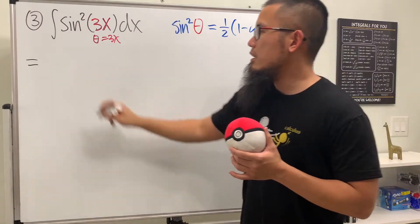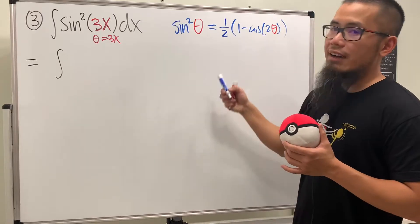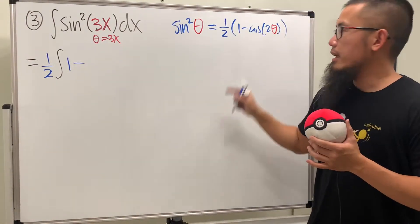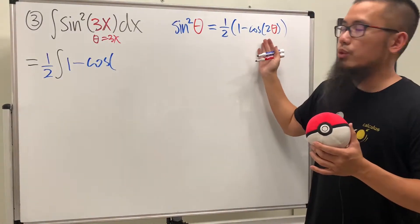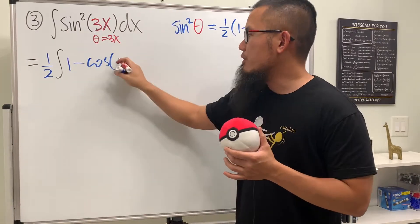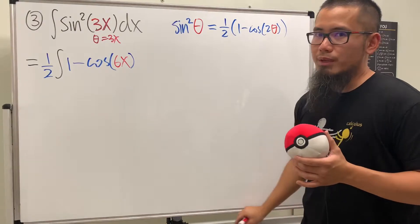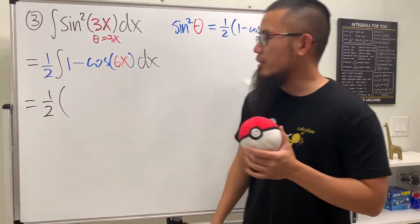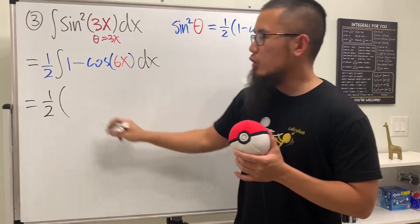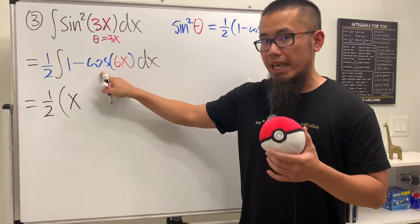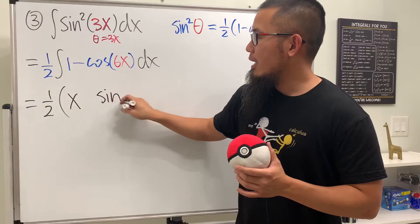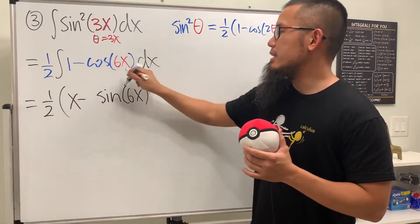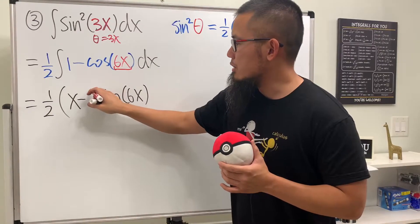We put on the integral sign, then one half as a constant in front, and we have one minus cosine of two times theta, which is two times 3x, giving us 6x. So the integral becomes one half times the integral of one minus cosine of 6x dx. Integrating 1 gives x; integrating cosine gives positive sine, but this is negative, so we bring that down: the input stays 6x and we divide by the derivative of 6x which is 6, giving one sixth.